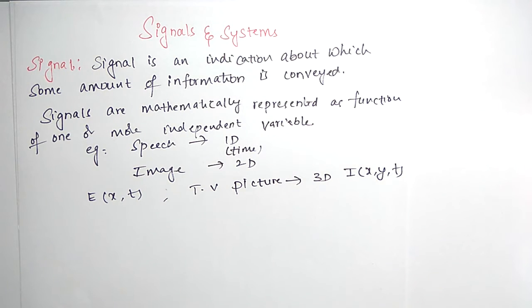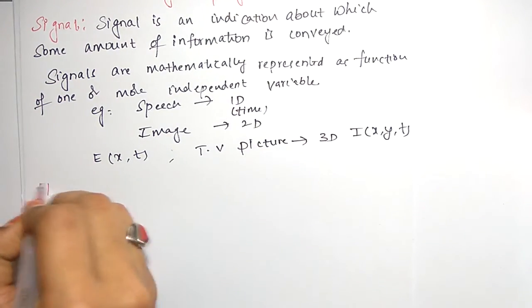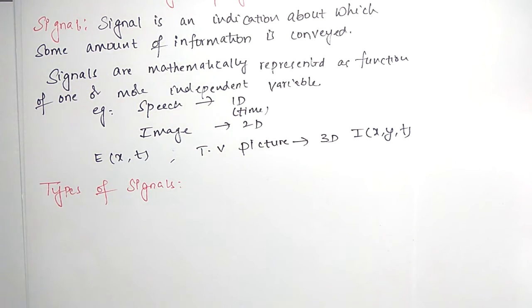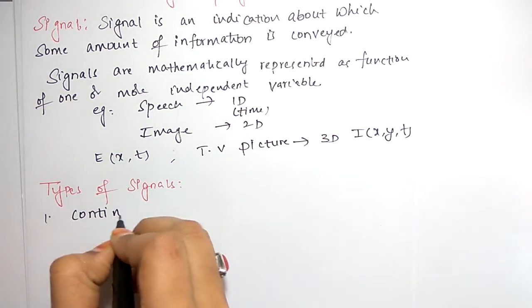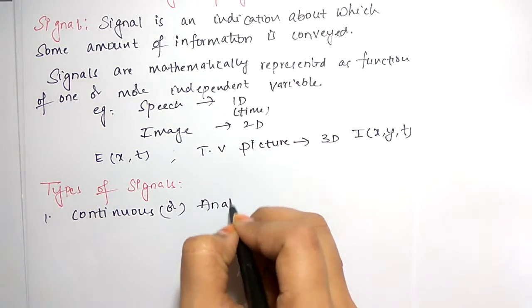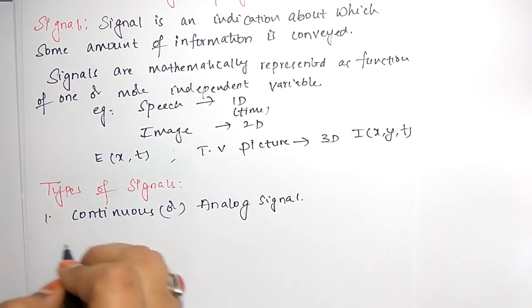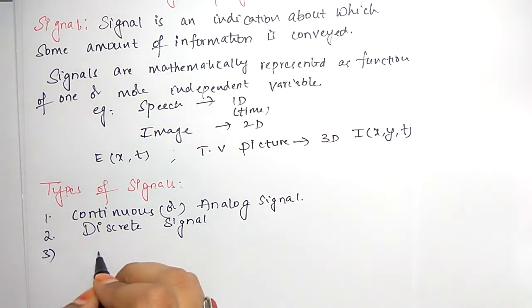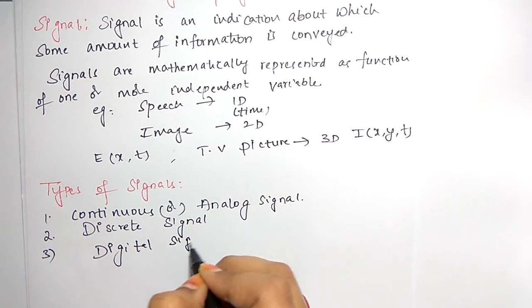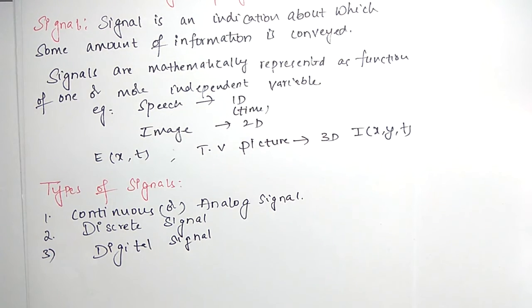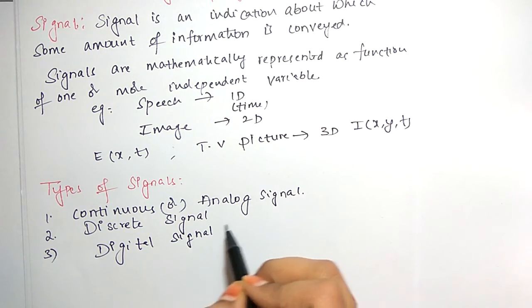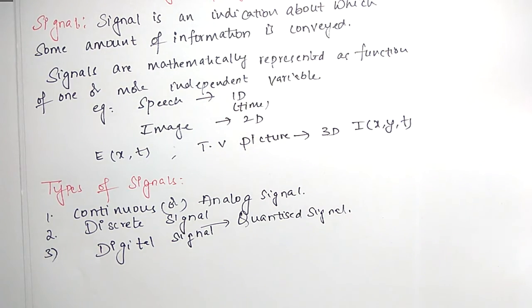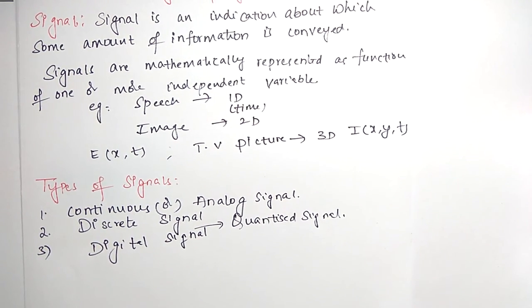There are different types of signals. You have three types of signals: one is continuous or analog signal, the second one is discrete signal, the third one is digital signal. In between discrete and digital signal, you have a quantized signal.